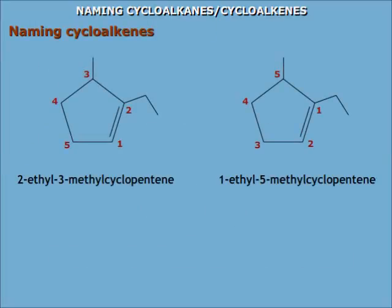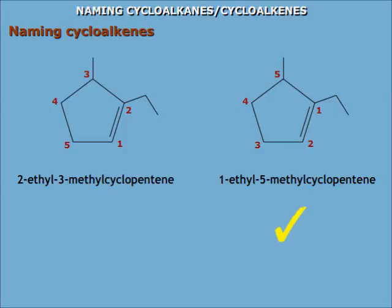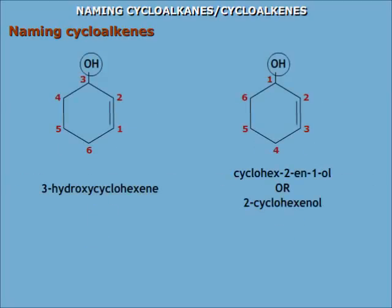Cycloalkenes containing a double bond should be numbered so that the two carbons of the double bond get the numbers 1 and 2; the rest of the substituents are numbered following the rule of point of first difference. So this compound is named 1-ethyl-5-methylcyclopentene, and not 2-ethyl-3-methylcyclopentene. When there is a functional group like the hydroxyl group, it should get the lowest locant — not the double bond — so this compound is named cyclohex-2-en-1-ol, or simply 2-cyclohexenol.